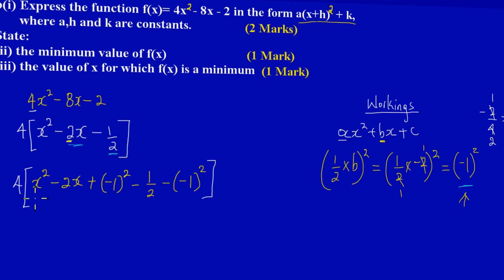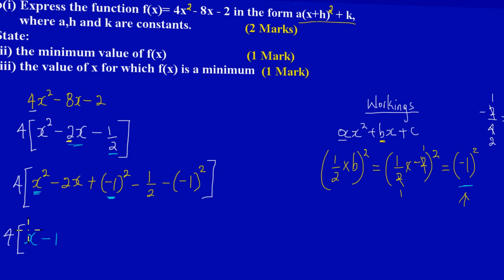For the next step, I take the 4 back down and open the bracket. I focus on the first two squared terms. We have x and (-1) — both were squared — so I group them as (x - 1)². Those are the first two square terms taken care of. What remains at the back are the numerical constants.